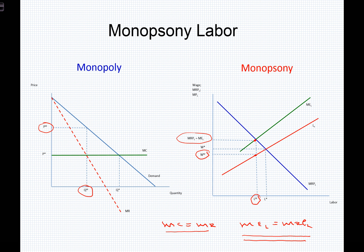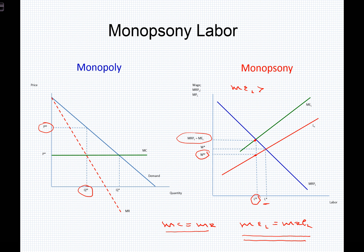The monopsony employer will employ fewer workers than in a market-clearing relationship, and will pay them based on the labor supply curve — meaningfully less than the marginal revenue product or marginal expense of labor. In monopsony, the marginal expense of labor is consistently greater than the wage paid. It is also greater, in almost every case, than W-star — the wage that would have existed at the confluence of labor supply and labor demand.